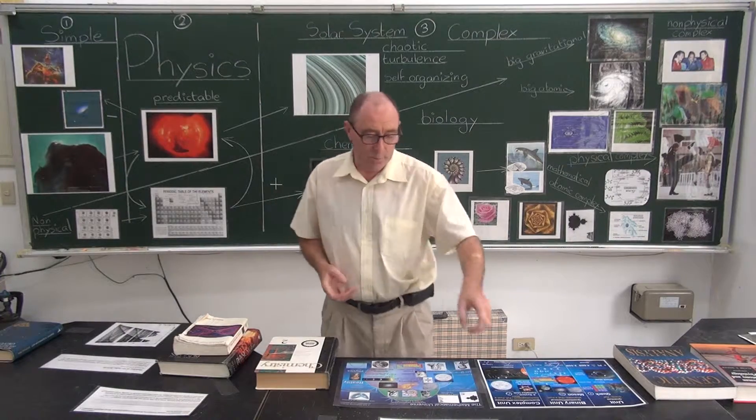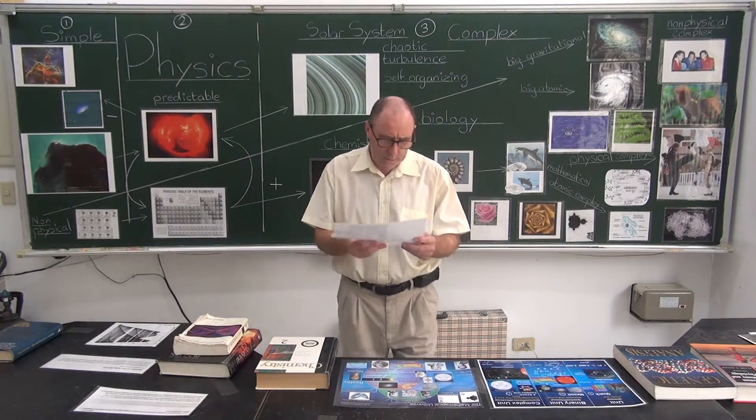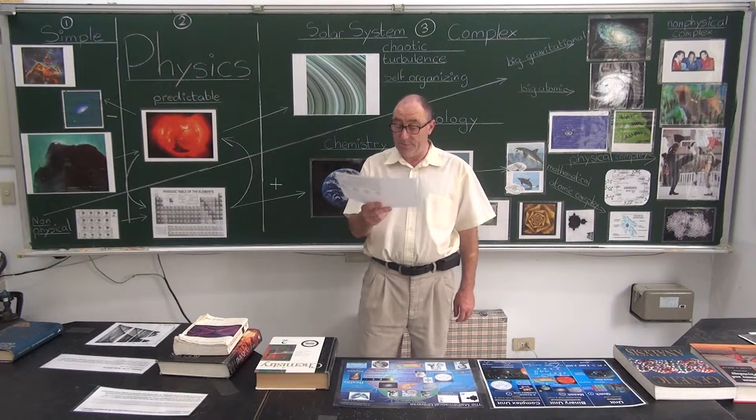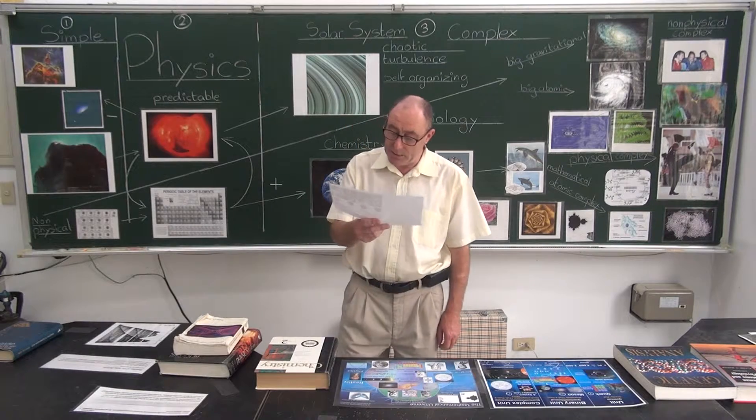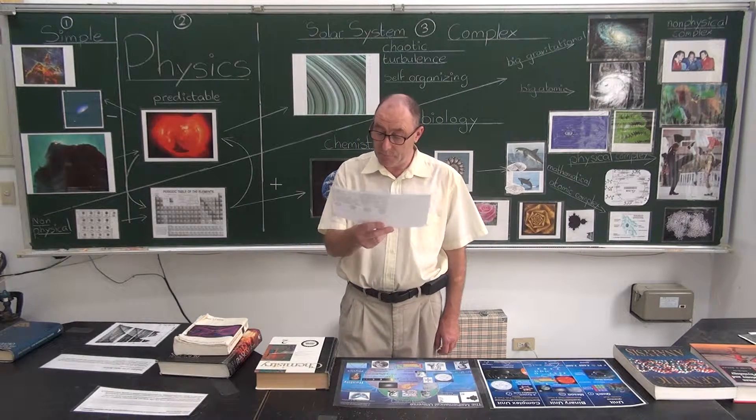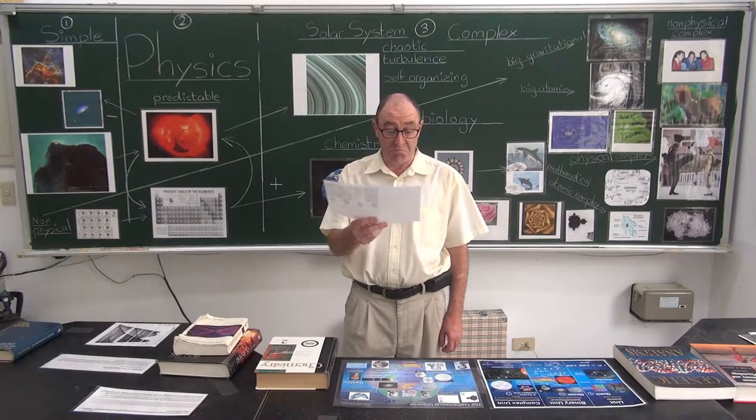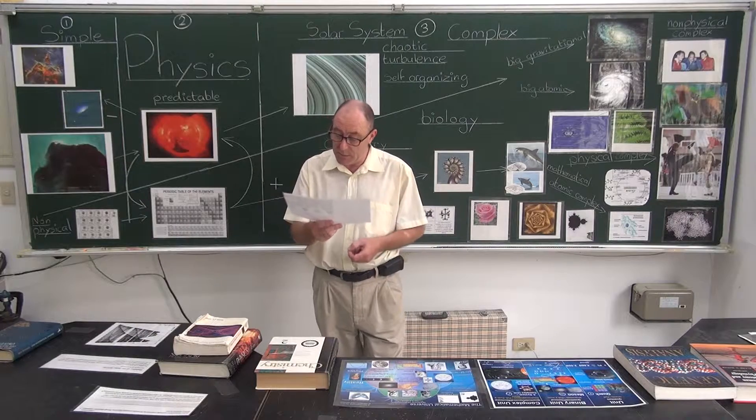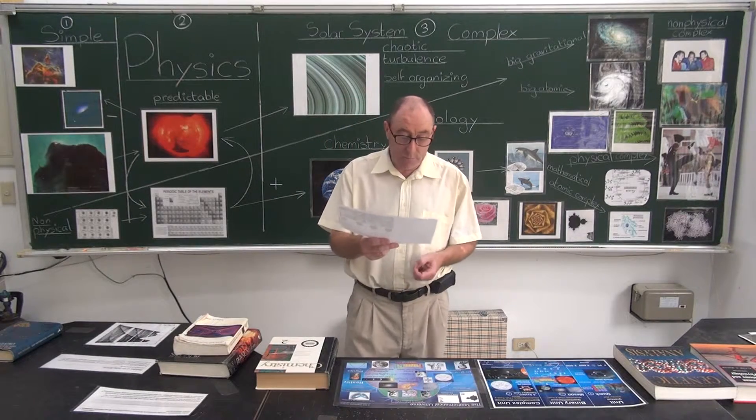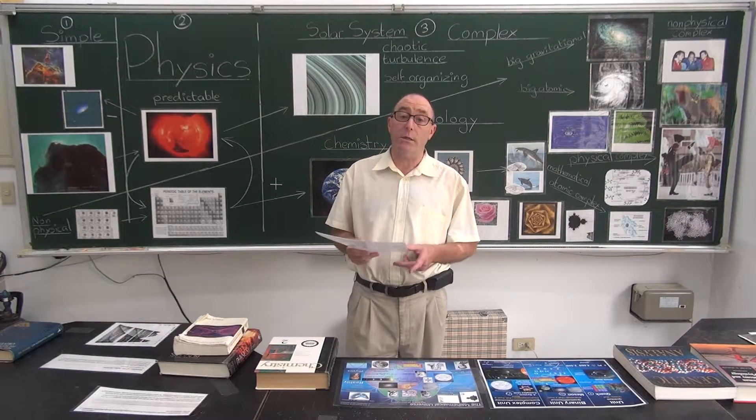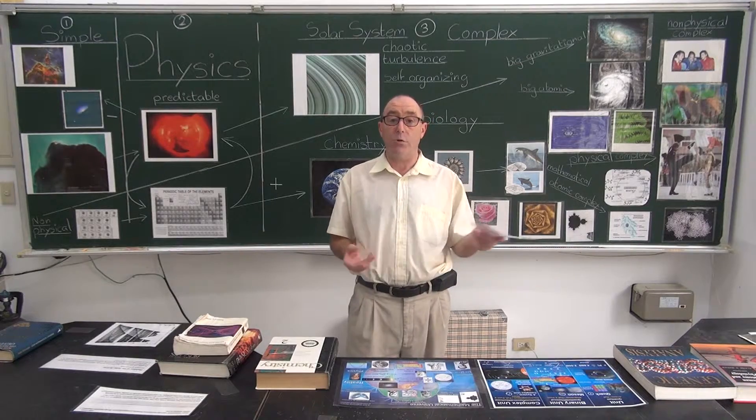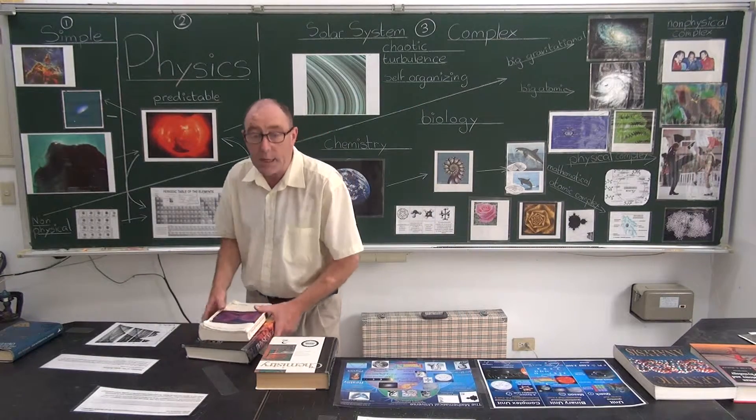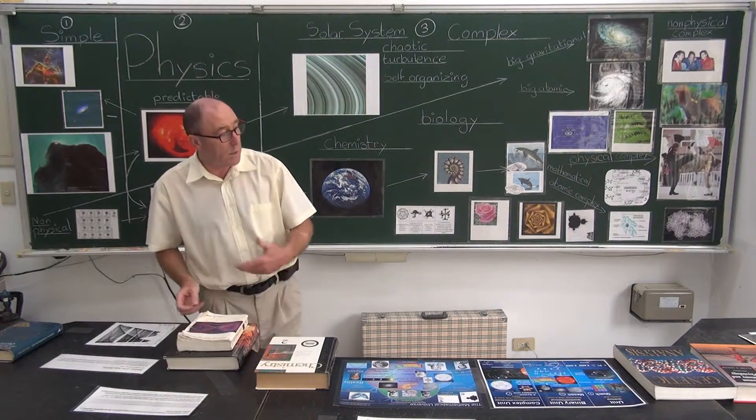Self-organisation. Let's just read what that is. Self-organisation occurs in a variety of physical, chemical, biological, robotic, social, and cognitive systems. Examples can be found in crystallisation, thermal convection, chemical oscillation, animal swarming, neural networks. So, there you are. Everything you need to describe the complex reality that we've got. But I've got to just put these together. I've got to stop saying that it's all going to be physics.